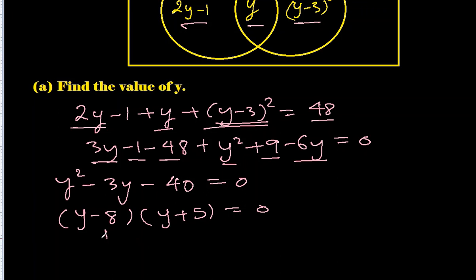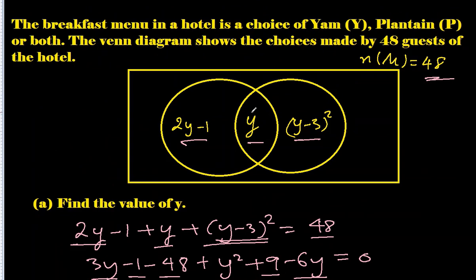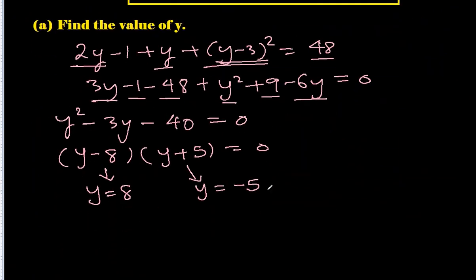So this gives us y = positive 8 and y = negative 5. And negative cannot give us positive numbers like this.